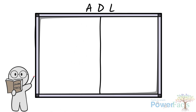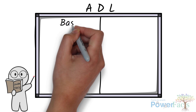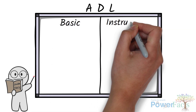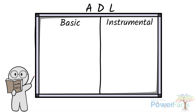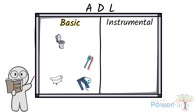Activities of daily living can be classified into basic and instrumental ADLs. Basic ADLs include toileting, bathing, dressing and grooming, feeding, ambulation and transferring.